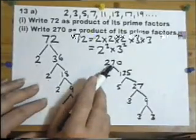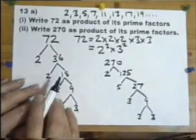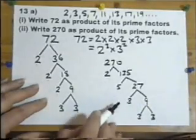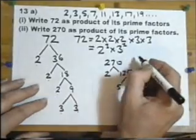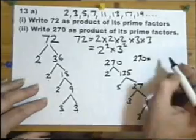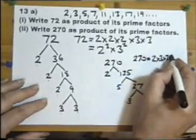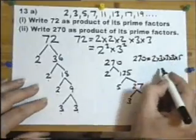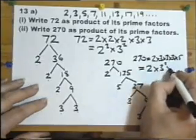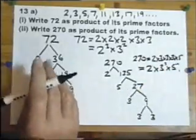So I've now got 270 is 2 times 5 times 3 times 3 times 3. We might as well put the numbers in an order of 2 times 3 times 3 times 5. So 270 is 2 times 3 times 3 times 3 times 5. Or in the shorthand version, like that. OK, so that's the end of that part.